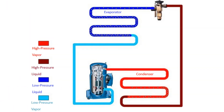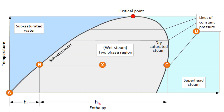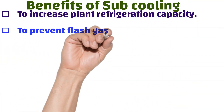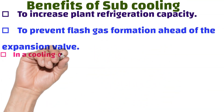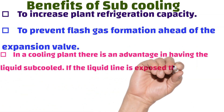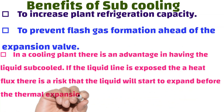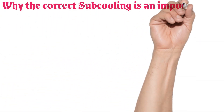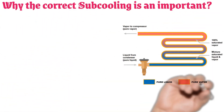Benefits of sub-cooling: one, to increase plant refrigeration capacity; two, to prevent flash gas formation ahead of the expansion valve; three, in a cooling plant, there is an advantage in having the liquid sub-cooled — if the liquid line is exposed to heat flux, there is a risk that the liquid will start to expand before the thermal expansion valve, causing flash gas, and the evaporator will fail to work.